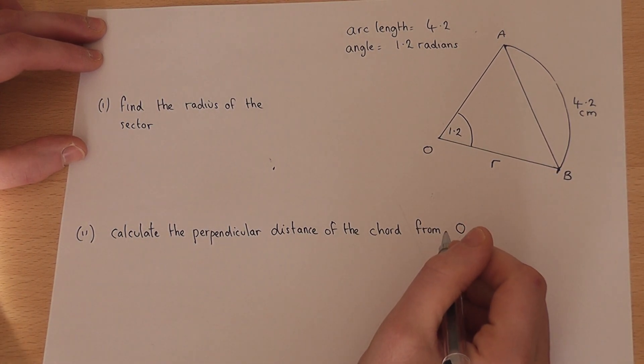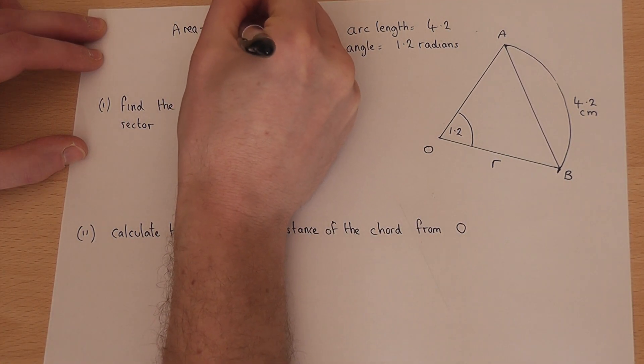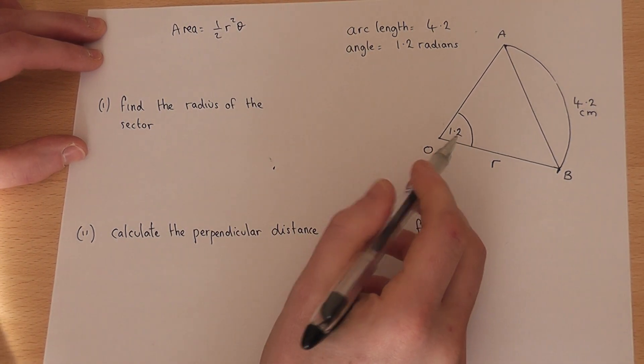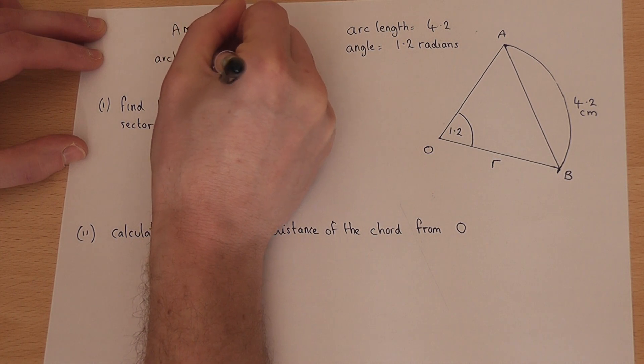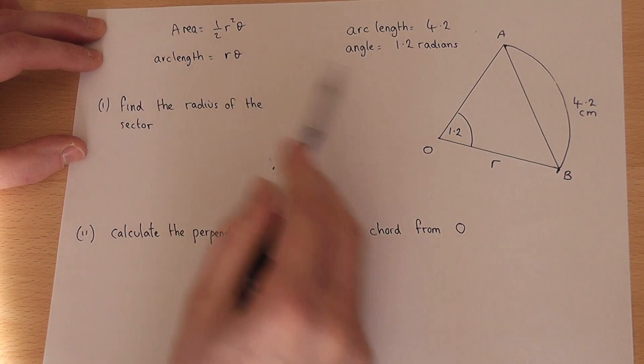Now there are two key formulas which are linked to sectors, and these are that the area is a half r-squared theta, where theta is the angle in radians, and the arc length is just r times theta, again where theta is the angle given in radians.